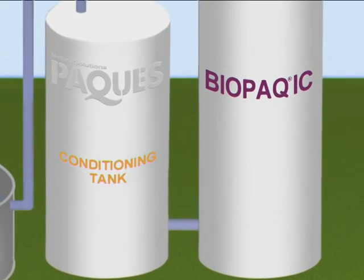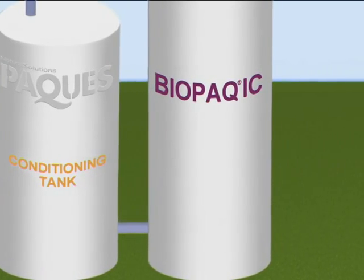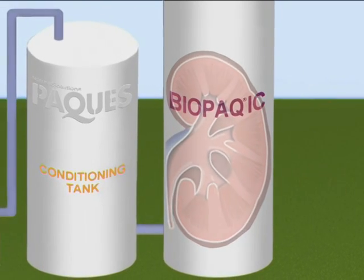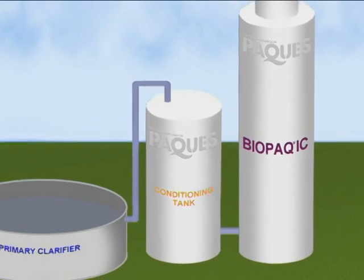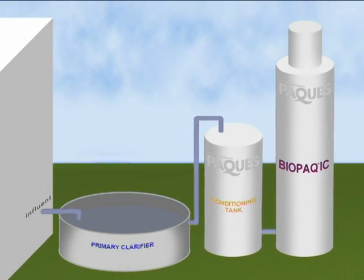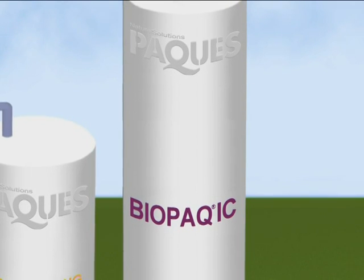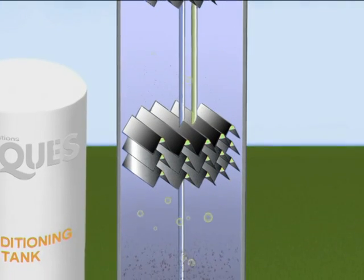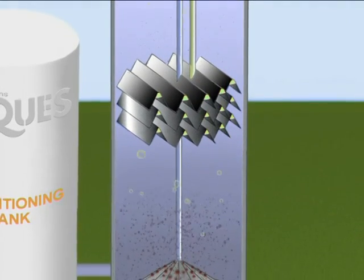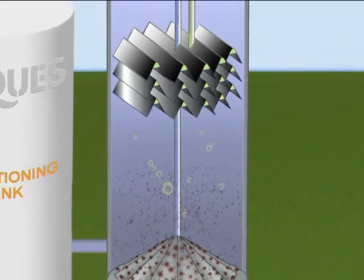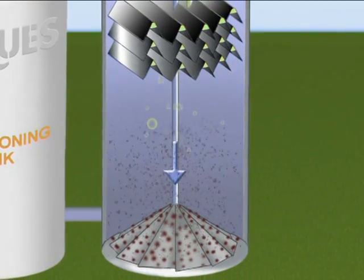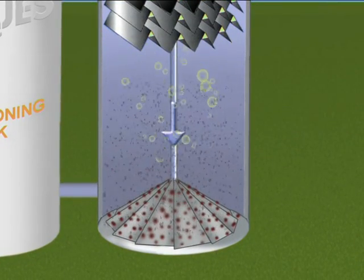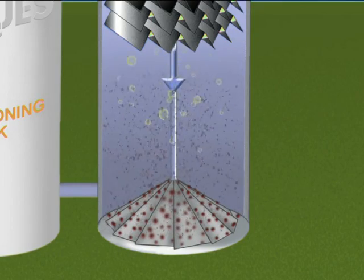The operation of anaerobic Biopac IC installations can be compared with that of the human kidney. The way the kidney removes waste from the blood, the Biopac IC reactor eliminates contaminants from the waste flow by a biological process. The biomass converts the largest part of the pollution in the influent into biogas at the bottom of the reactor. This biogas is collected and drives an internal circulation within the system. As pollution increases, the increased biogas production steps up internal circulation.